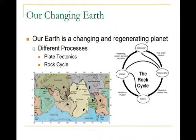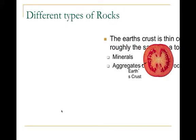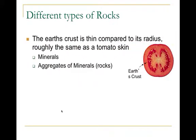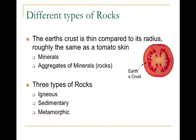The earth's crust is really small — like the skin of a tomato compared to the whole tomato. The mantle and core make up the rest. The crust is where we live and where all the rocks we talk about are found. There are three types of rocks: igneous, sedimentary, and metamorphic.